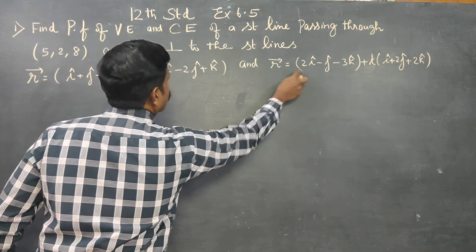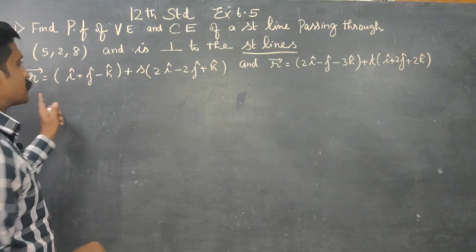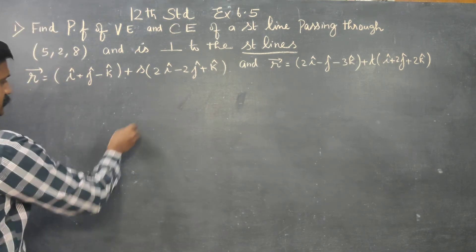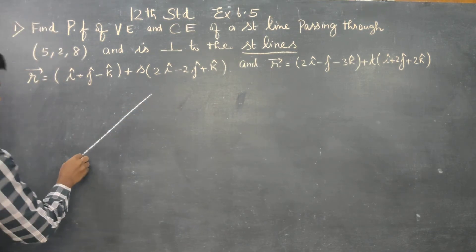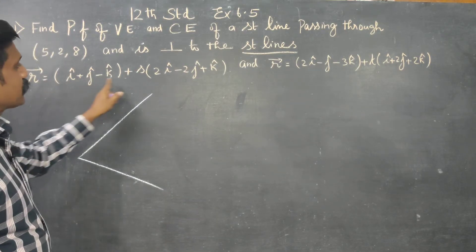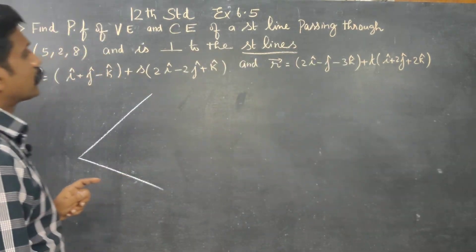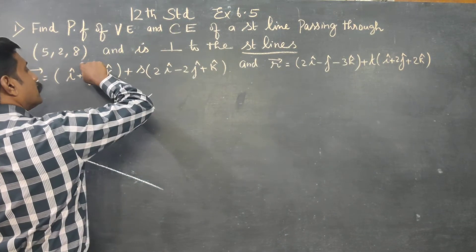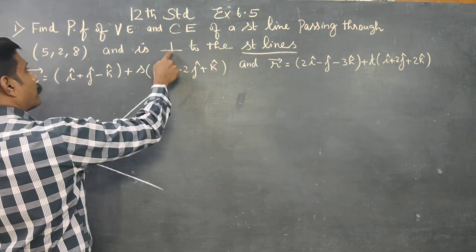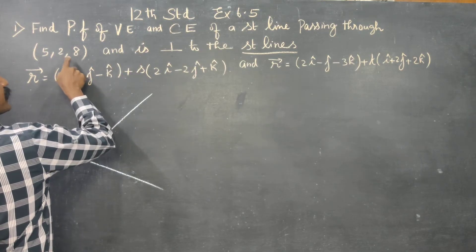These are two straight lines. In the straight lines, we have two straight lines given. R vector is equal to — these straight lines are perpendicular to the required straight line.